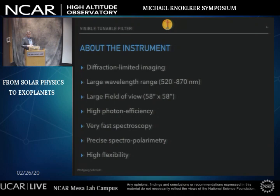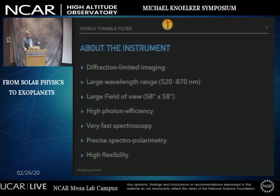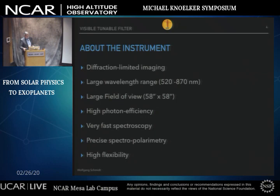The instrument provides diffraction-limited imaging, which has consequences for the design. It has a rather large wavelength range from the green to the near-infrared. The field of view is what I call a large field of view — nearly one arc minute by one arc minute. I remember discussions with a person named Bala from NSO where our perceptions of a large field of view differed by nearly one order of magnitude, and this is why we ended up at one arc minute across. In retrospect, I wish I had pushed for a smaller field of view. But it is quite photon-efficient, can do very fast spectroscopy, and will try to do very precise polarimetry. It is a very flexible and versatile instrument.